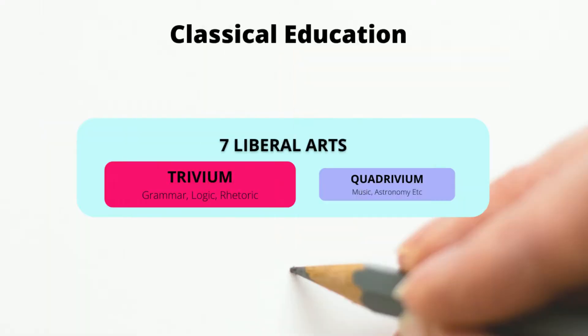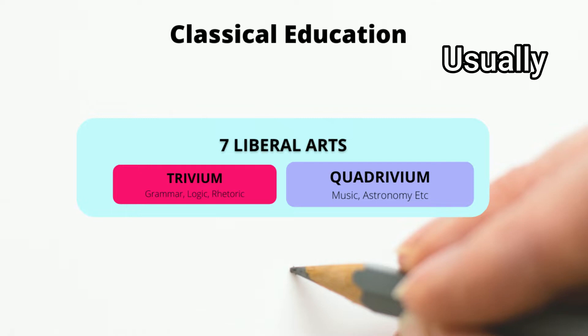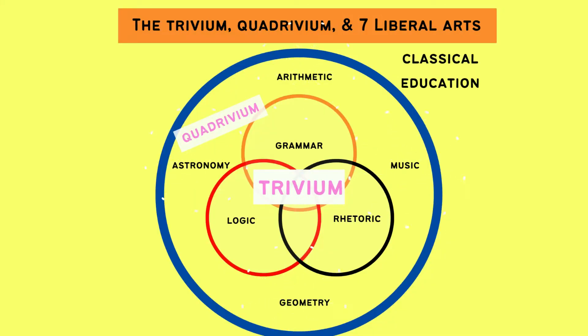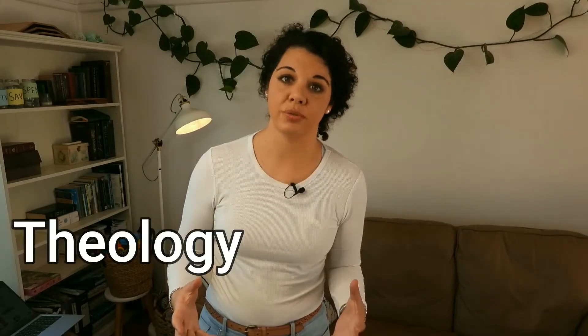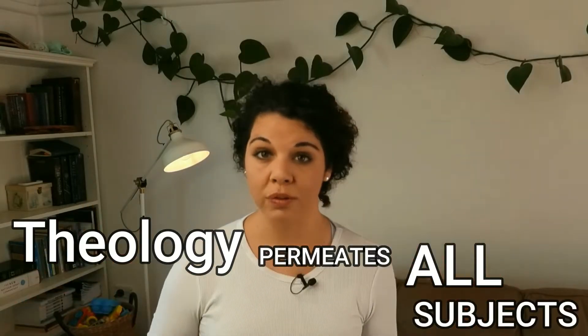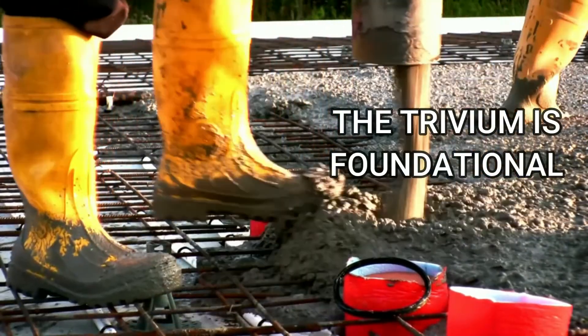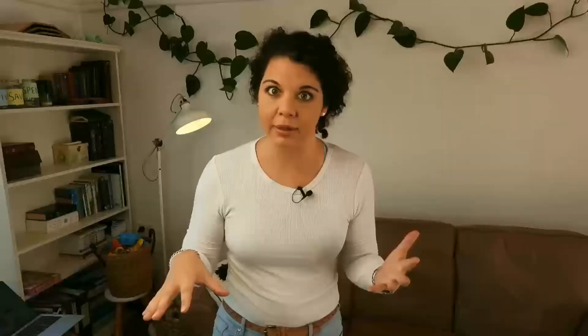We were talking about the trivium and the quadrivium but we hadn't quite touched on the quadrivium, which is usually done at a university after you finish the trivium stages. The quadrivium subjects are the four liberal arts subjects and these include arithmetic, geometry, astronomy, and music — and you might have theology in there too, although theology would permeate all subjects. The idea with splitting it into the trivium and the quadrivium is that the trivium gives you the basic knowledge you need to then study the quadrivium really well, and any other subject you would choose to study thereafter.